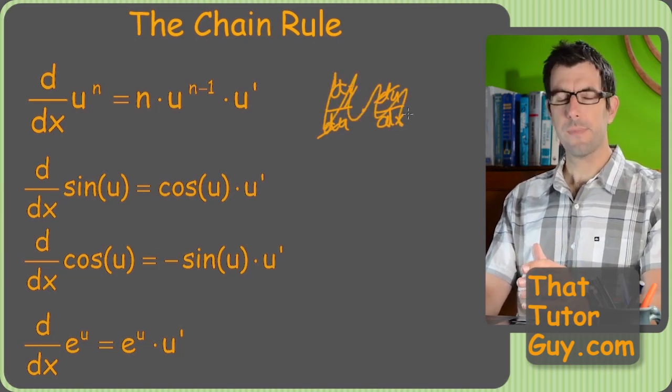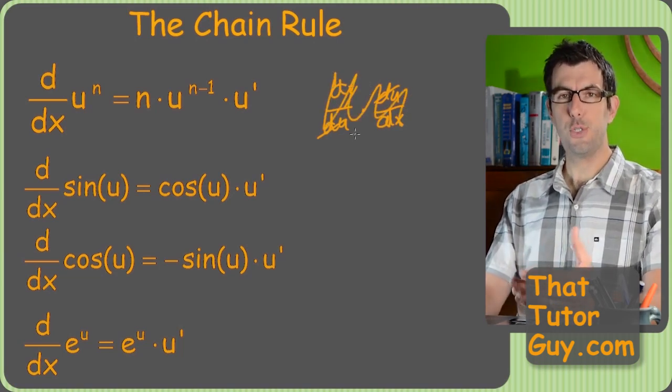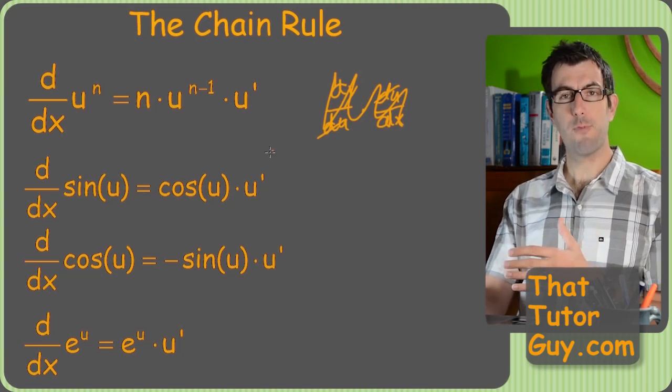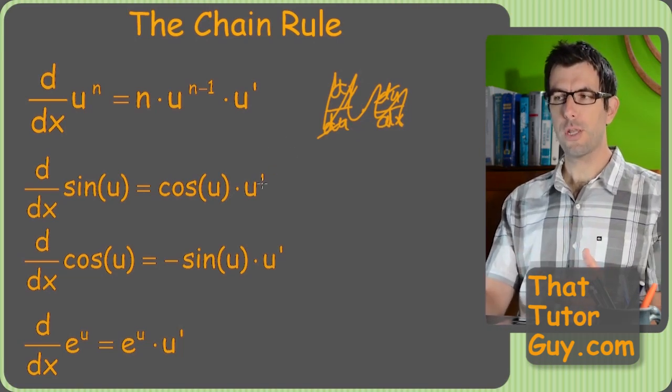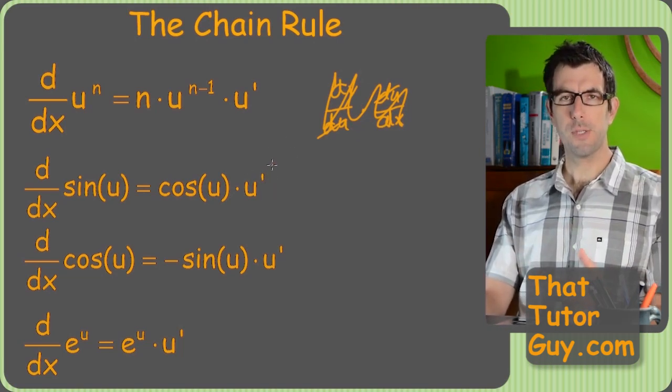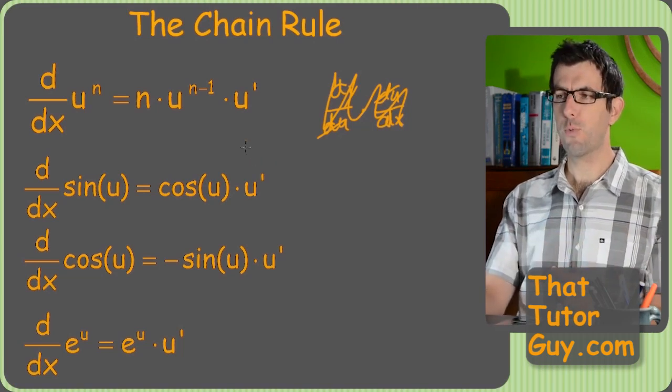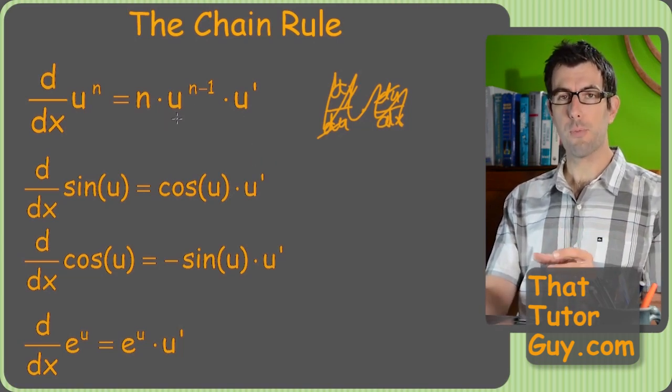But what I want you guys to see is the chain rule is just derivatives, it's the same formulas we've been using, we're just going to throw a u prime on the end. So like everything else is just in the noise, what really matters is that we're going to throw a u prime on the end.